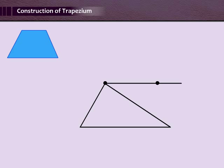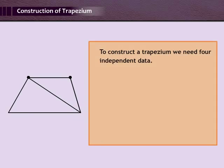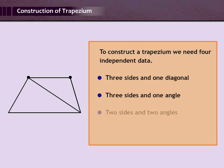The fourth vertex lies on this line and is fixed with the help of the remaining measurement. By joining the appropriate vertices, we get the required trapezium. To construct a trapezium, we need four independent data: three sides and one diagonal, three sides and one angle, two sides and two angles, or four sides. Let's learn how to construct a trapezium with the following measurements.